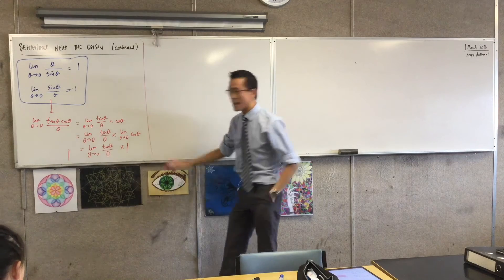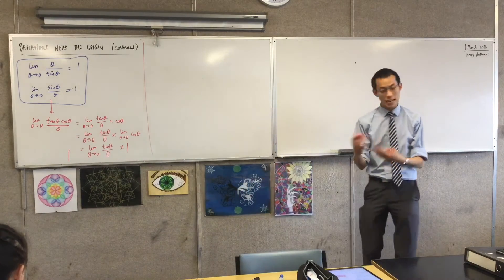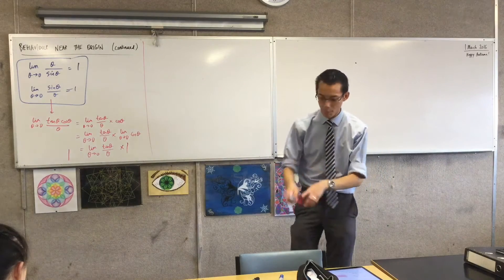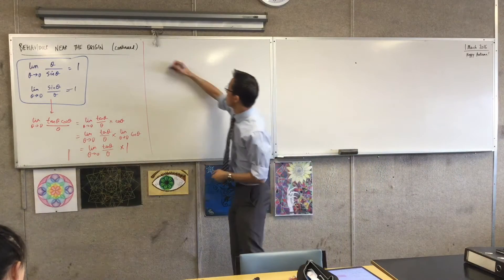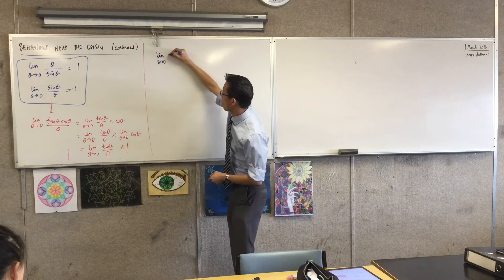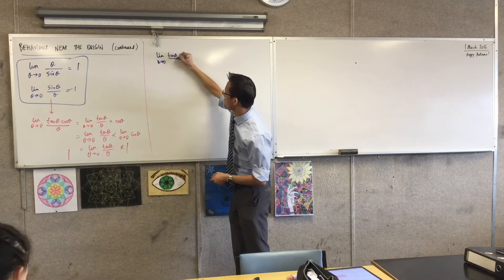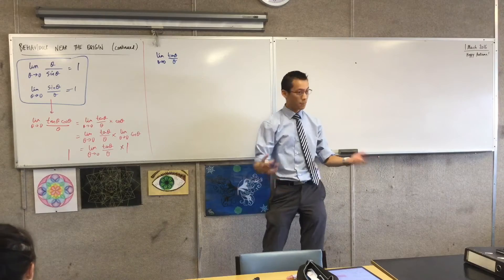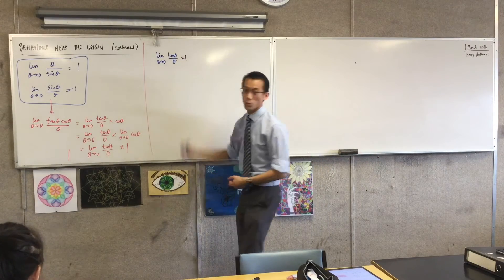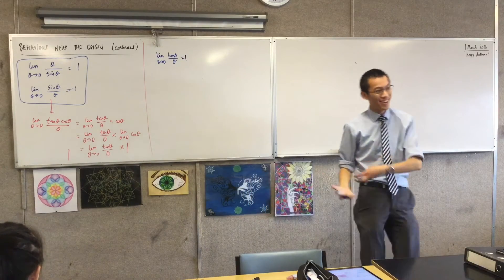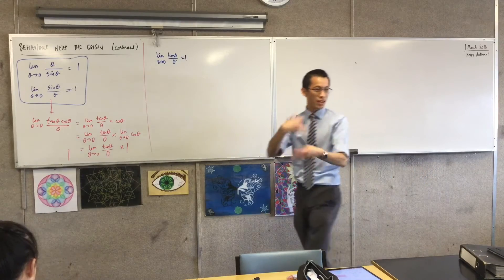So this tells me now, bringing it all together because now I've got tan theta by themselves, I'll put this in a box. But the limit as theta approaches 0 of not just sine theta over theta but tan theta over theta also equal to 1. And that means because again 1 is its own reciprocal, I can turn this upside down.